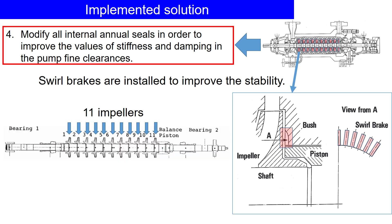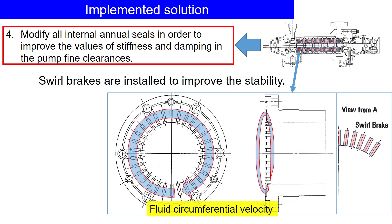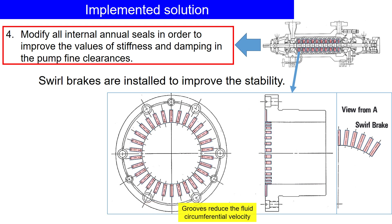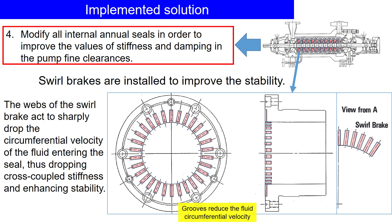This particular pump has 11 impellers. The seals were installed between the impellers to reduce leaks between stages. By modifying these seals, the pump was made more stable. As the pump spins, the fluid has large circumferential velocity, but the grooves in the swirl brakes act to sharply drop the circumferential velocity of the fluid entering the seal, thereby reducing the destabilizing forces.